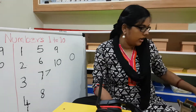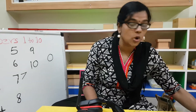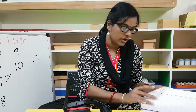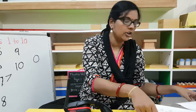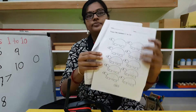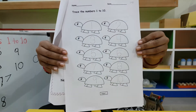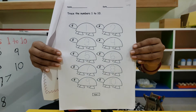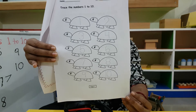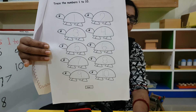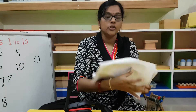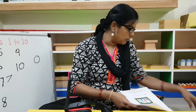Now what you are going to do is open your workbook — open your Maths workbook and go to page number one. You see here? This is the activity — you have to trace numbers one to ten. The numbers are inside the tortoise, the turtle. You will trace from one to ten and you will do it today and tomorrow.